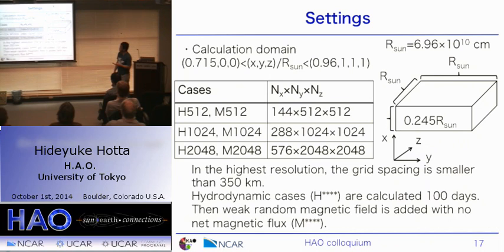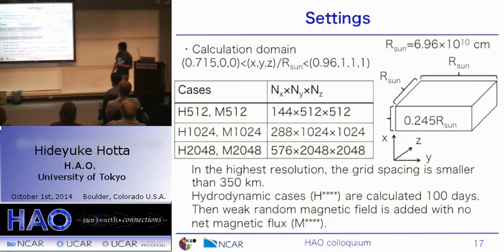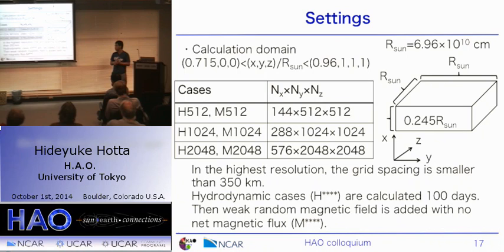The horizontal extent is solar radius by solar radius by 25% of the solar radius. We carry out three calculations with different resolutions — low, medium, and high. The highest resolution has a grid spacing smaller than 350 kilometers. H denotes the hydrodynamic case. We calculate the hydrodynamic case for 100 days and then add a random magnetic field with no magnetic flux, and the case becomes M.